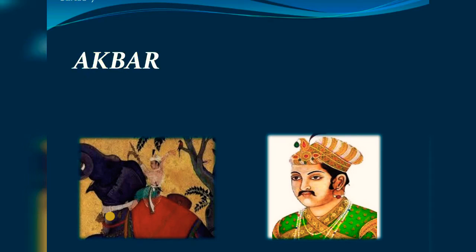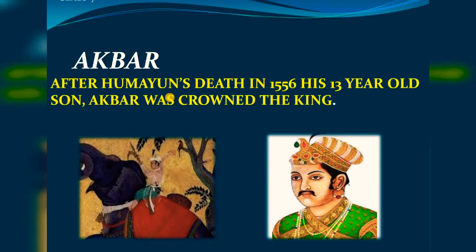As you all know, one of the most famous Mughal emperors is Akbar. Akbar was born in 1542 at Amarkot when Humayun was in exile. After Humayun's death in 1556, his 13-year-old son Akbar was crowned king, with Bairam Khan as his regent. A regent is a person who stays with the king and helps administer, because when the king is very young and not yet 18, a regent is appointed to administer the state.